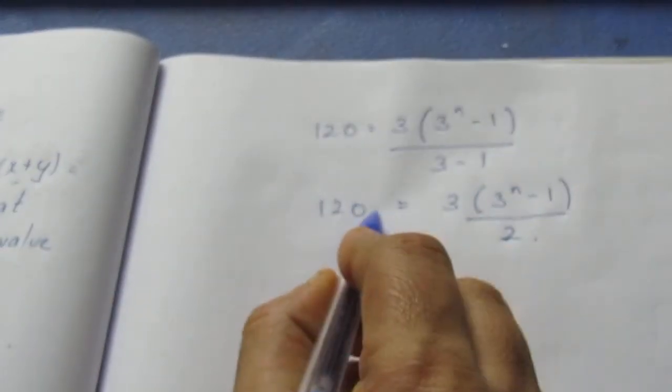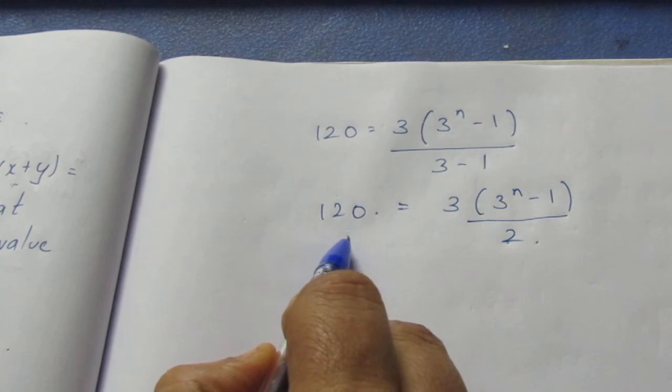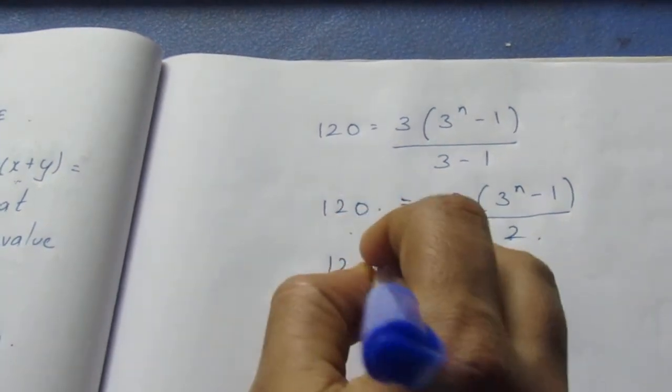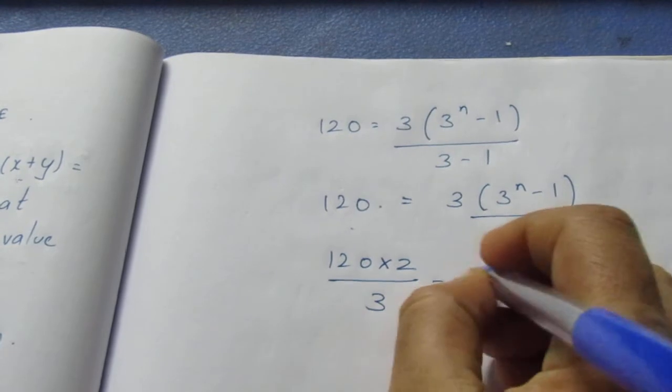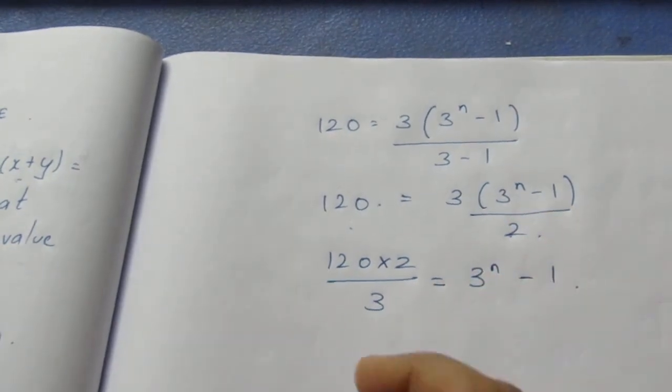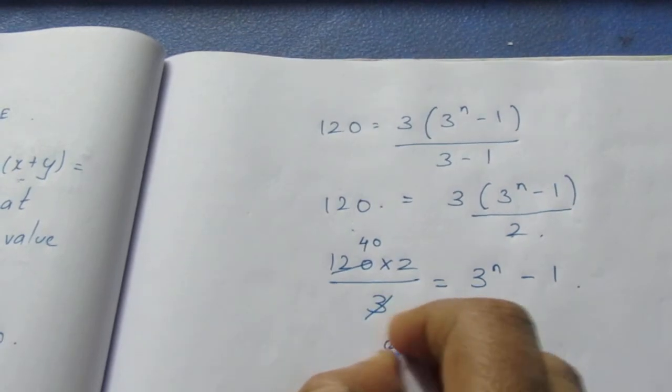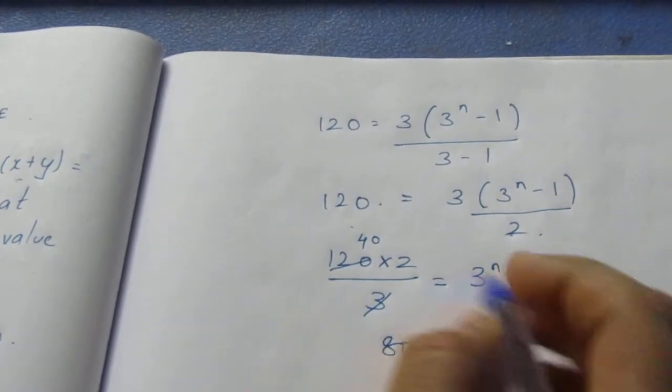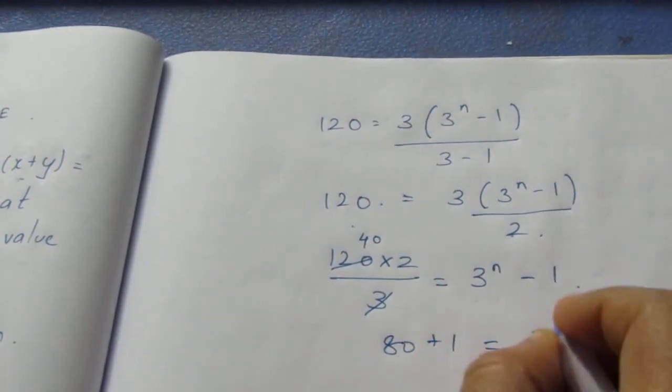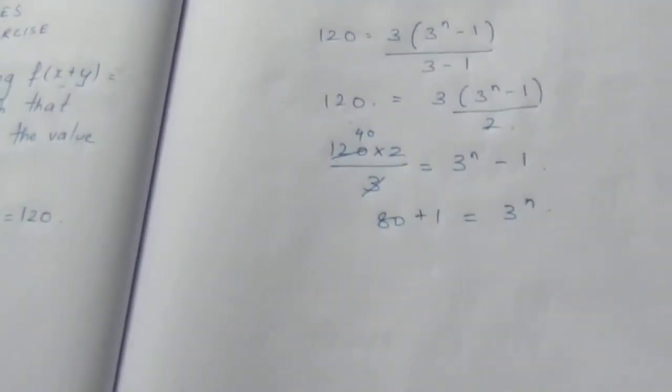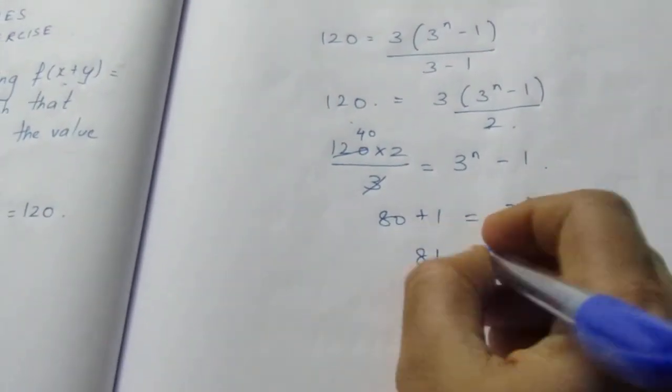Bringing 2 to this side, it multiplies, and 3 to this side divides. So 120 times 2 divided by 3 equals 3^n minus 1. Since 3 goes into 120 forty times, we get 80. Bringing 1 to this side, it adds. So 81 equals 3^n.